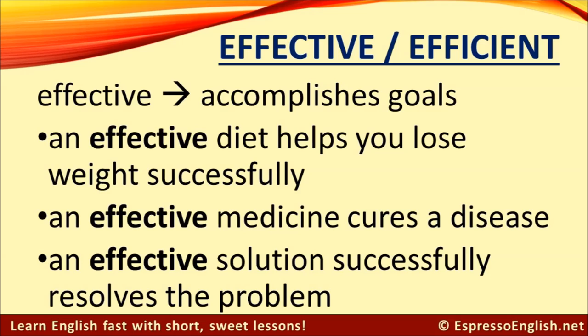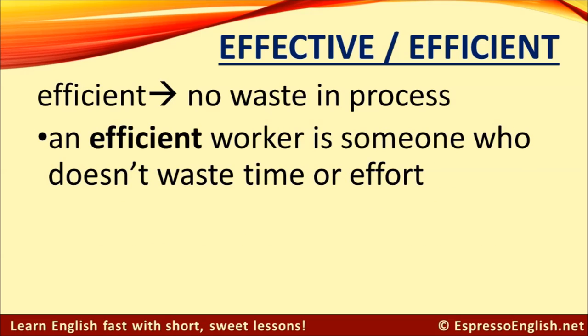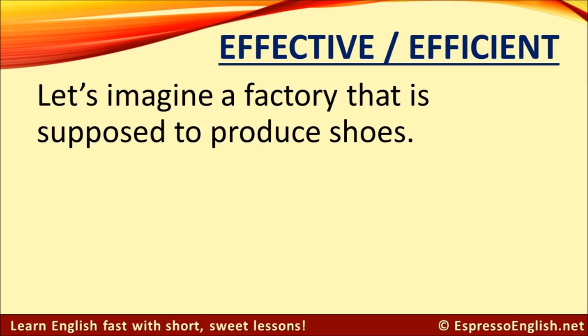Here are some examples of effective things that help you accomplish goals. An effective diet helps you lose weight successfully. An effective medicine cures a disease. An effective solution successfully resolves the problem. Now look at these examples of things that are efficient, with no waste in the process. An efficient machine functions while using a minimum amount of energy. An efficient process is one where there are no extra or unnecessary activities. And an efficient worker is someone who doesn't waste time or effort.